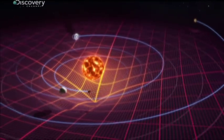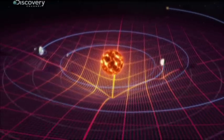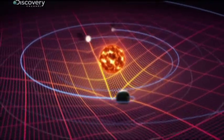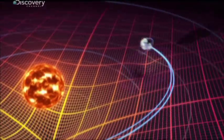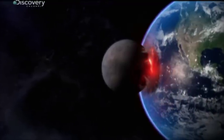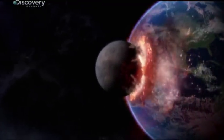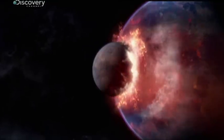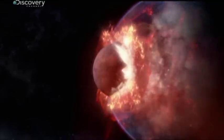Mars could be thrown out of the solar system, and Mercury might crash into the Earth. The entire house of cards that is our solar system would completely fall apart.